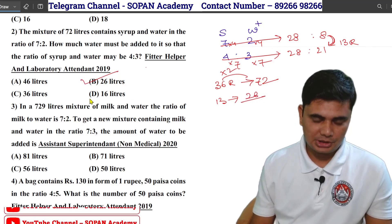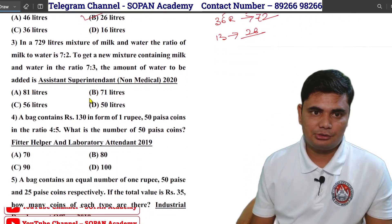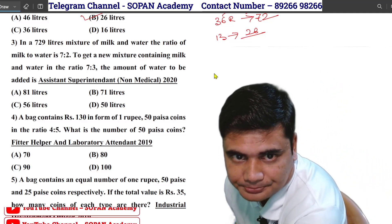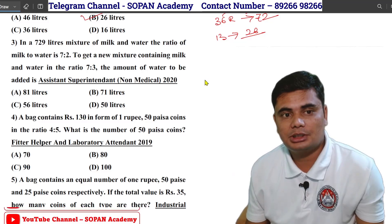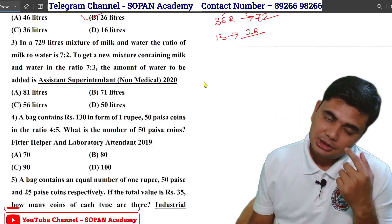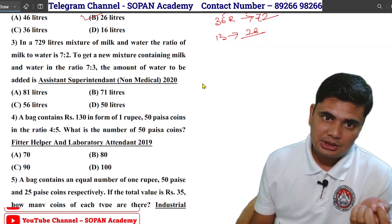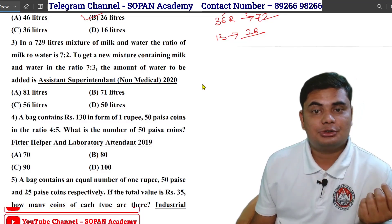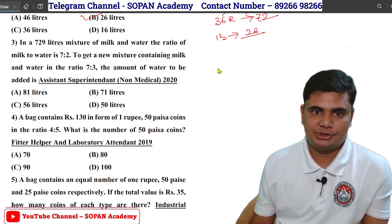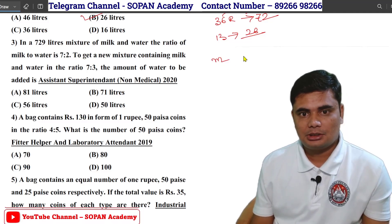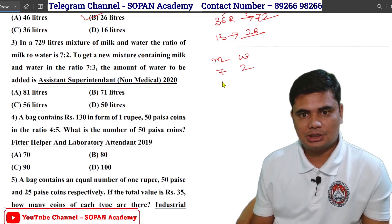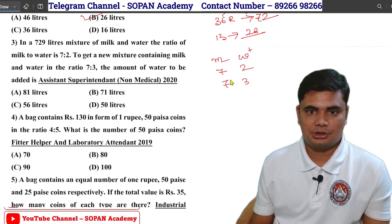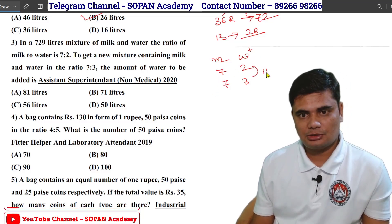The ratio gives 26 liters. In a 79-liter mixture of milk and water, the ratio of milk to water is 7 is to 2. To get the new mixture containing milk and water in the ratio 7 is to 3. The ratio of the give is 7 is to 3. So we have 1 ratio to add.